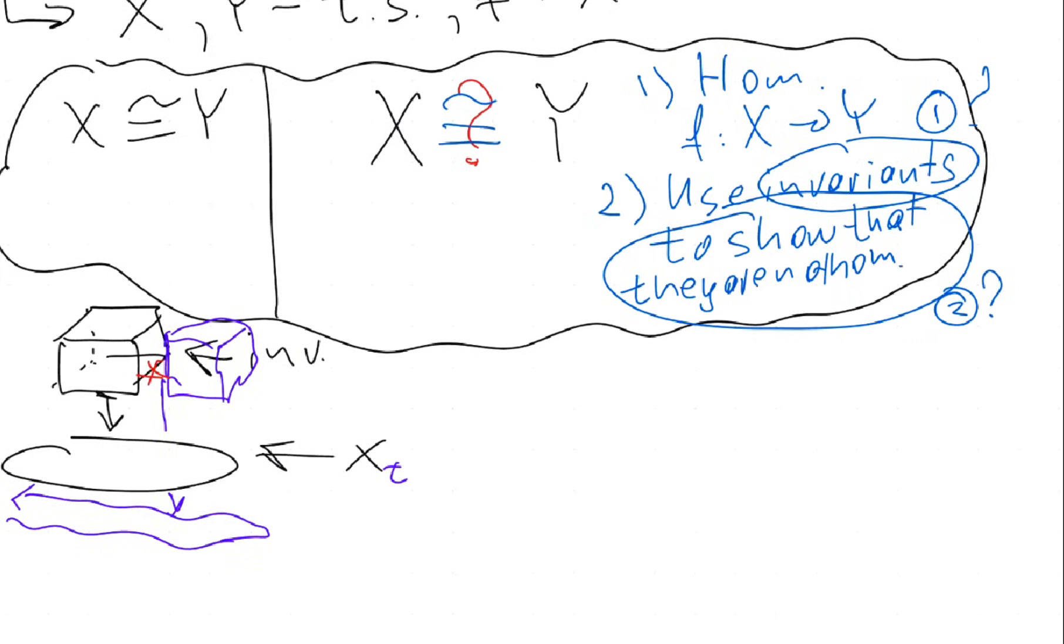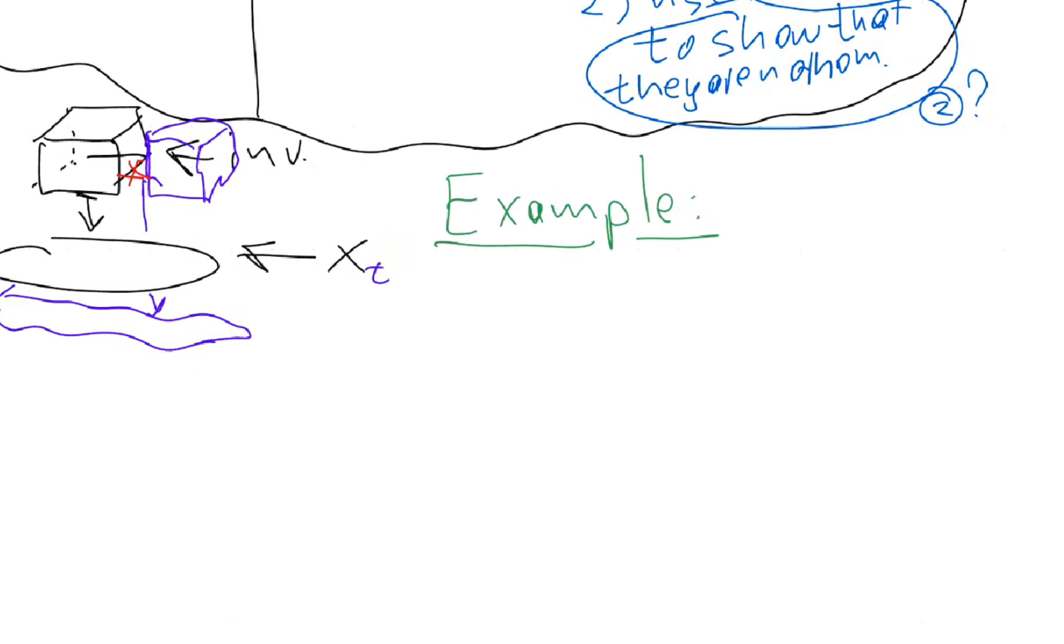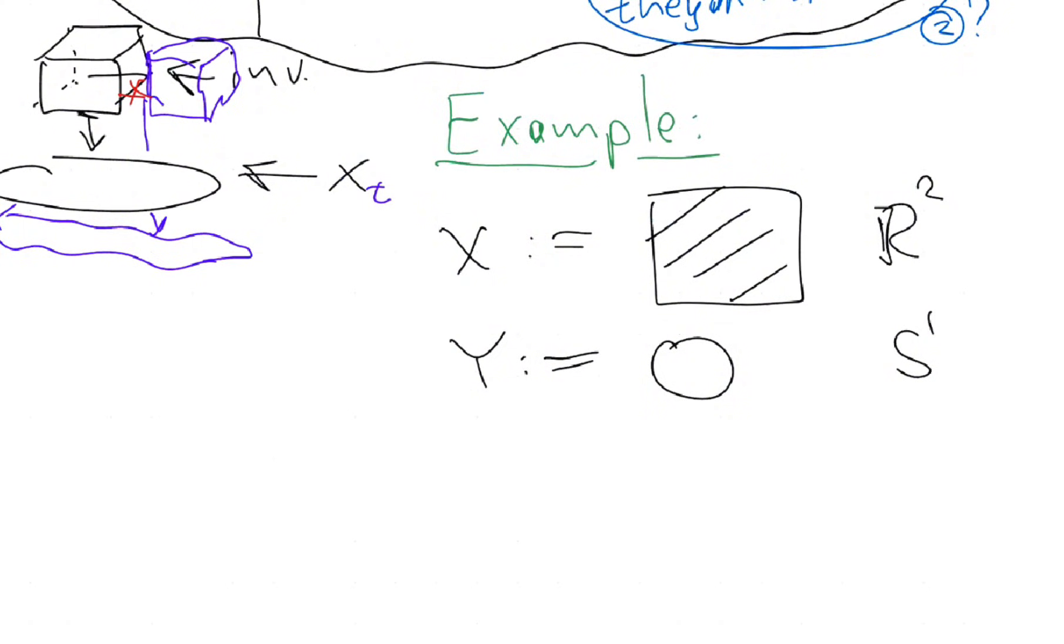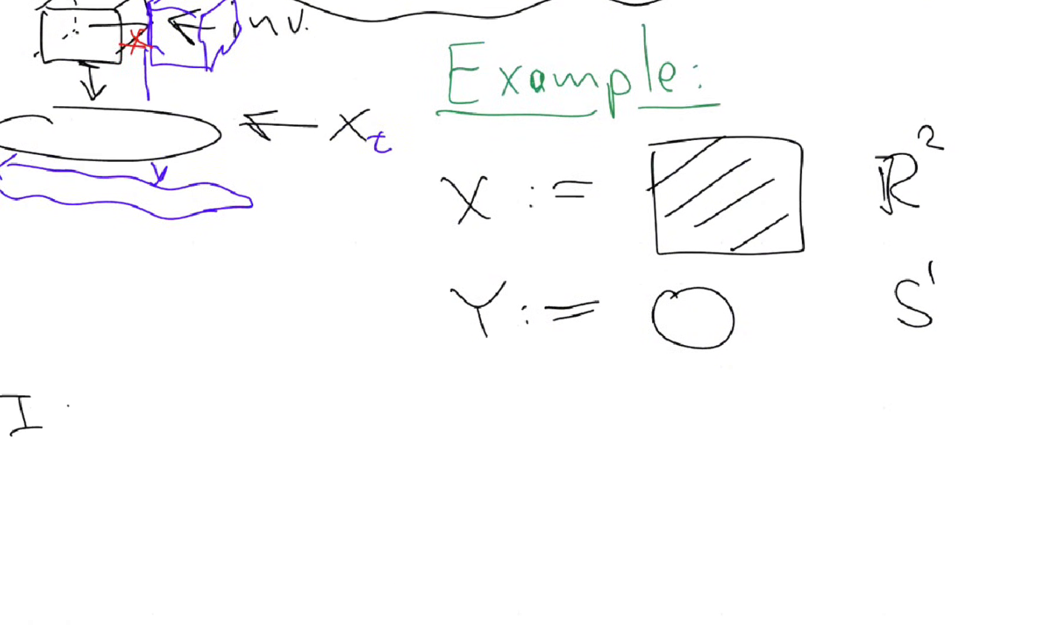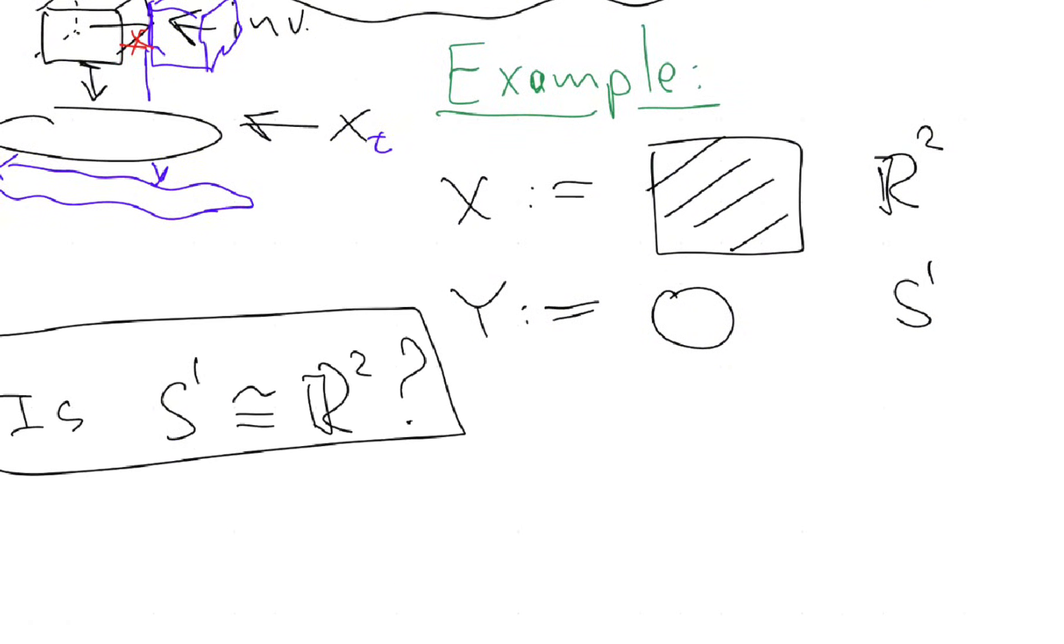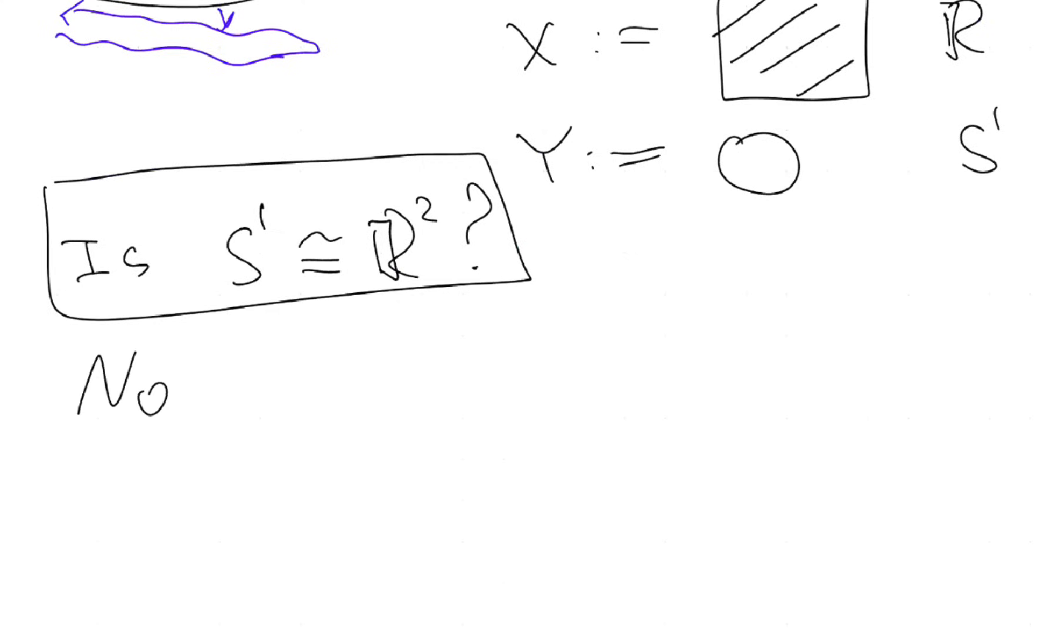Okay, so then an example, a simple example. You have X be, let's say, a plane. And you have Y be a circle S¹. So this is R². And this is S¹. Is S¹ homeomorphic to R²? And let's right now discuss different ways of showing and proving this.